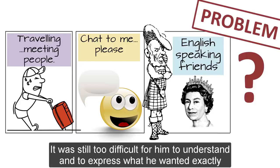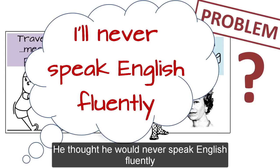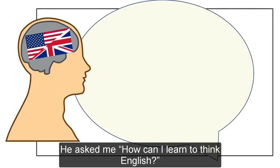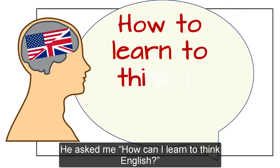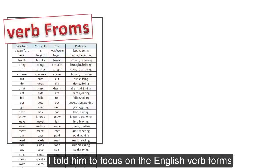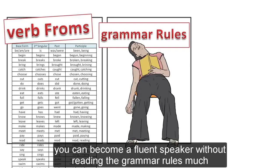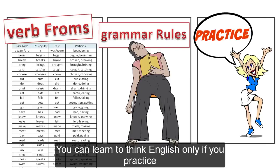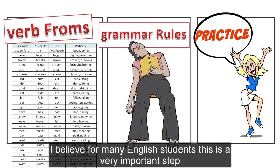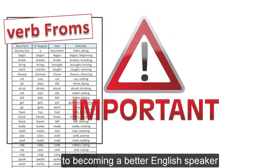It's too expensive to travel and you have no English speaking friends. But what was wrong with this student? It was still too difficult for him to understand and to express what he wanted exactly. He thought he would never speak English fluently. He asked me, how can I learn to think English? I told him to focus on the English verb forms. If you can use all the verb forms in a context correctly, you can become a fluent speaker without reading the grammar rules much. You can learn to think English only if you practice. I believe for many English students this is a very important step to becoming a better English speaker.